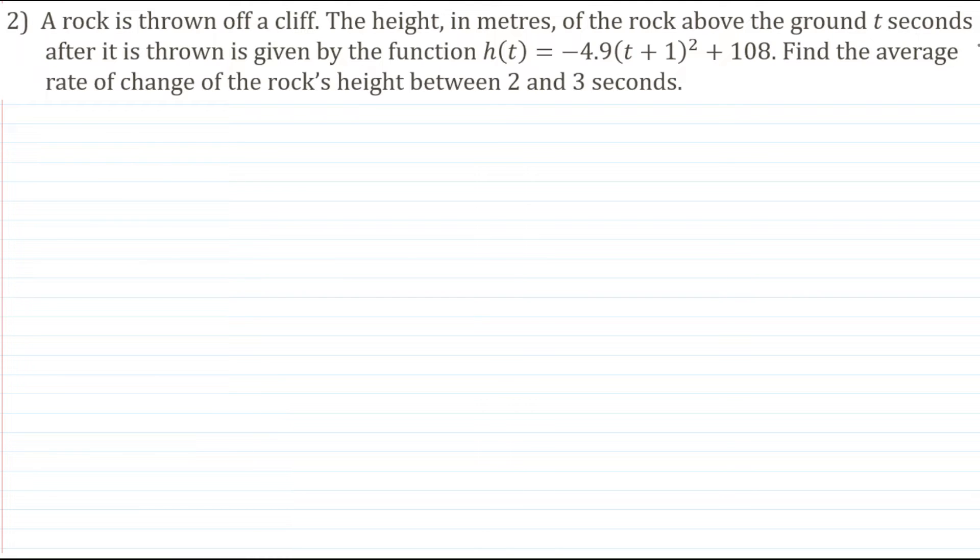And we're told that the height in meters of the rock above the ground t seconds after it is thrown is given by our function h(t) here. And we're asked to find the average rate of change of the rock's height between 2 and 3 seconds. So how do we do this?